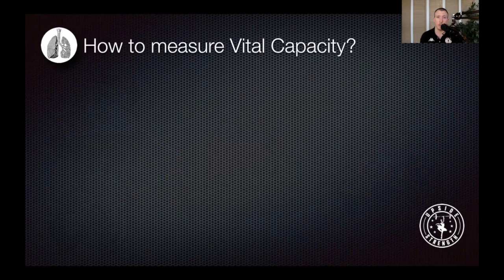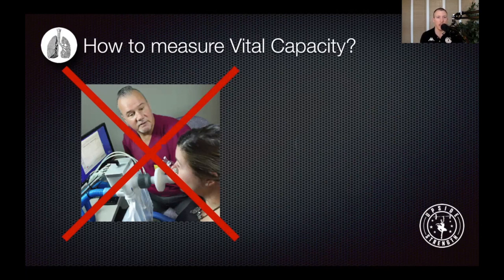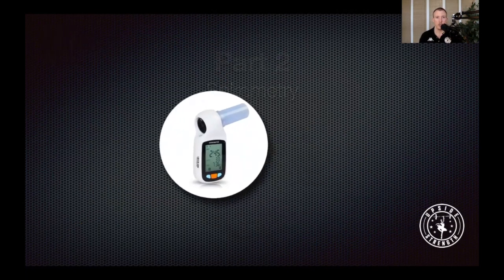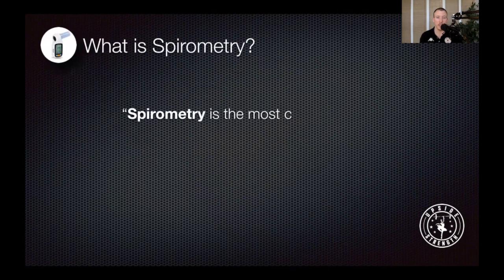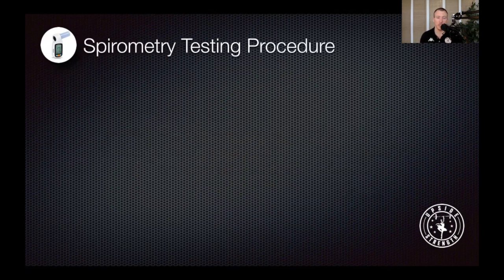So how can we measure vital capacity? How can we determine how much lung space our athletes have? We often think about a lab setting with lots of tubes and cables and expensive equipment. This is not what we're going to talk about today. We want something practical that can be used in the gym or on the field. For this, we're going to talk about spirometry — a simple, cheap, and effective test that can be conducted in just a few minutes anywhere. Spirometry is the most common of pulmonary function tests. It measures lung function, specifically the amount and speed of air that can be inhaled and exhaled.